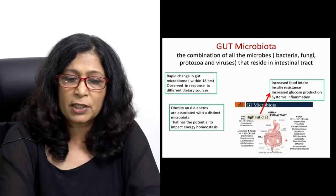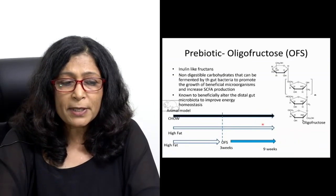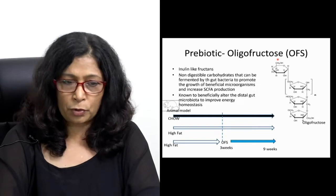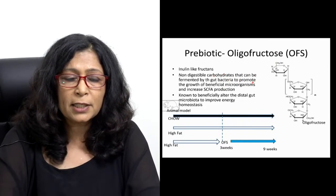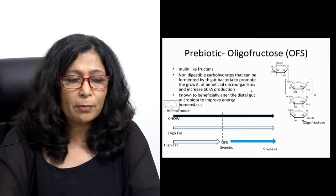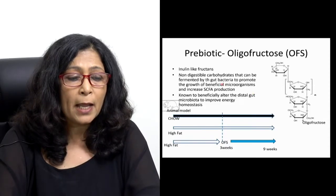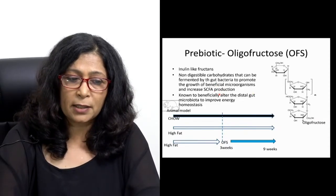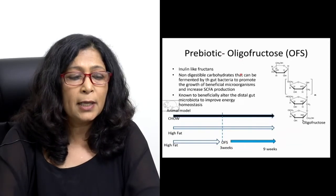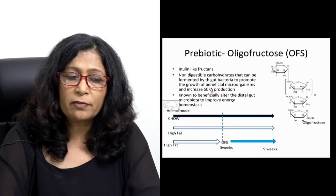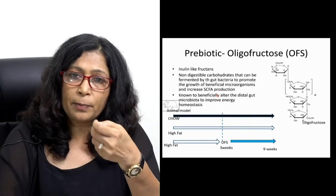What she presented is that a prebiotic oligofructose, which is in fructans, are non-digestible carbohydrates that can be fermented by gut bacteria. As we were discussing, the fibers get fermented and create short-chain fatty acids. If someone is given this oligofructose or OFS, more short-chain fatty acids are produced, which in turn stimulate L cells and increase GLP-1 secretion.